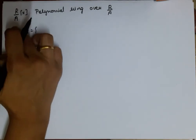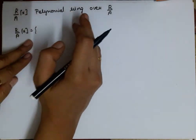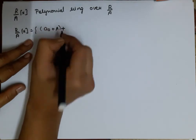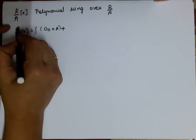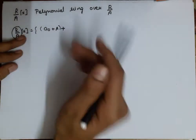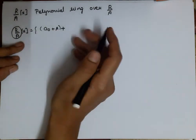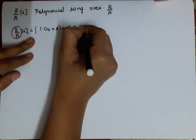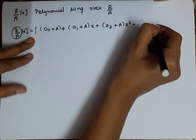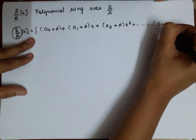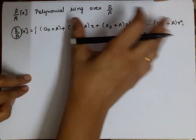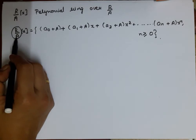R/A[x] will have elements: elements of R/A multiplied by powers of x — x, x², and so on. So a typical element looks like (a₀ + A) + (a₁ + A)x + (a₂ + A)x² + … + (aₙ + A)xⁿ, where n is a non-negative integer. These are all the polynomials in our collection R/A[x].